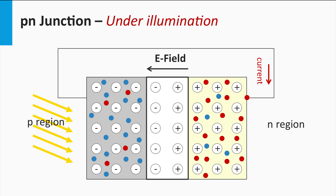If we illuminate the P-N junction, the density of the minority charge carriers is increased by many orders of magnitude, and as a result the drift becomes dominant and the P-N junction generates a large current.